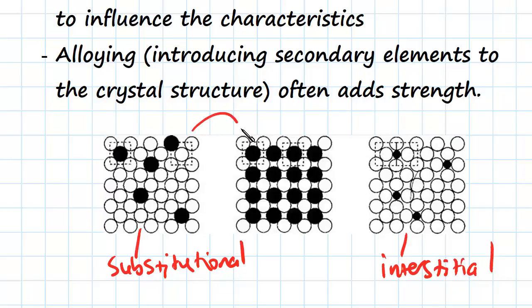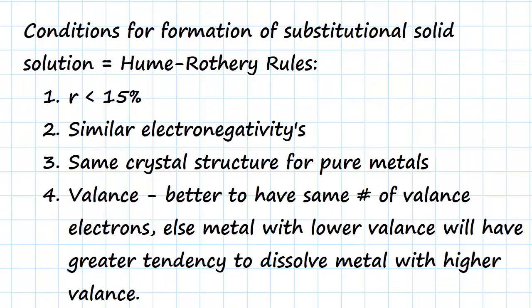We have certain conditions for the formation of substitutional solid solutions, and we call these the Hume-Rothery rules. We can't just add any element we want; they have to meet the conditions of these rules. The first rule is that the difference in atomic radius must be within a certain limit.